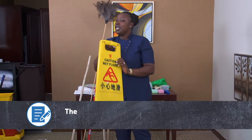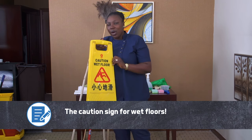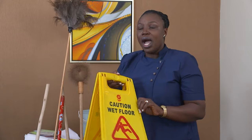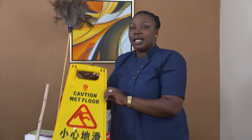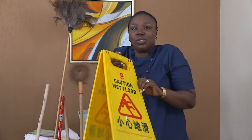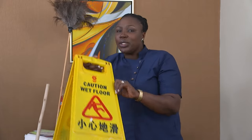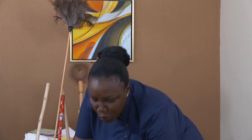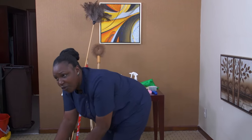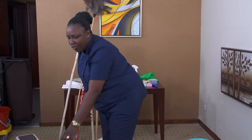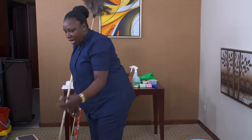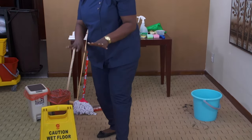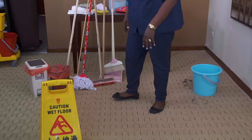The caution sign is very important. When you are cleaning an area, remember this sign protects people — just as gloves protect yourself as personal protective equipment, this sign protects people from outside who come near where you are cleaning. You have to put it in front of where you are cleaning so everyone who sees it knows the floor is wet, and it can protect them while walking around.